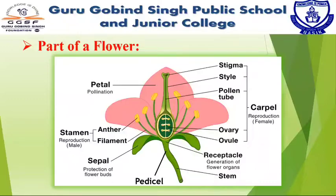Pedicel, Receptacle, Calyx, Corolla, Androecium, and Gynoecium are the different parts of a flower.